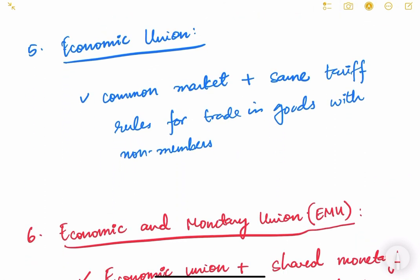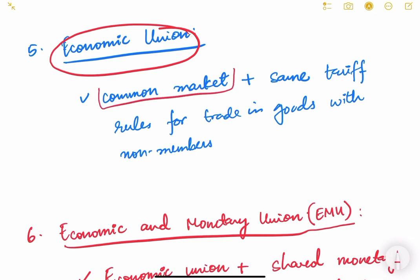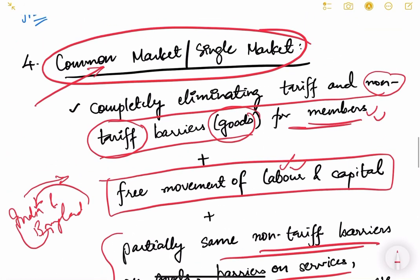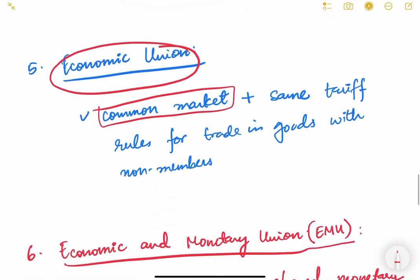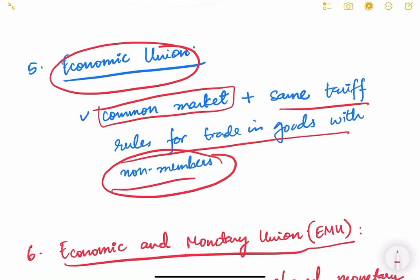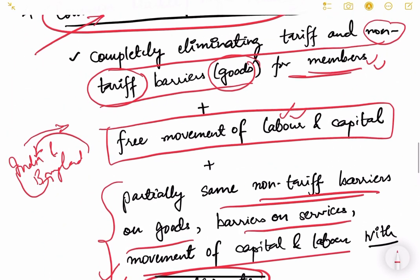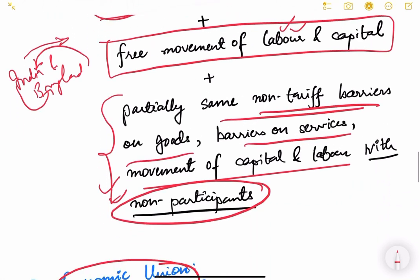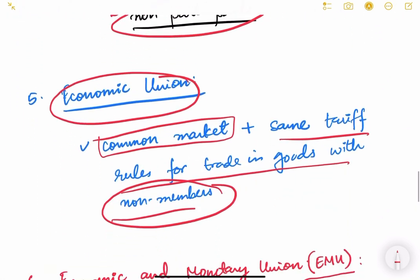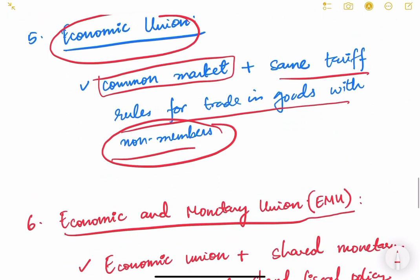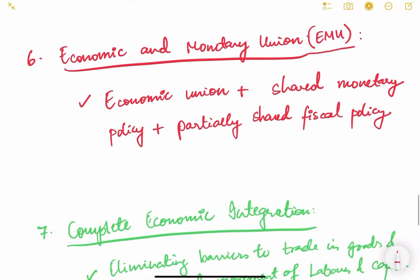An Economic Union includes all the conditions of a Common Market, plus the same tariff rules for trade in goods with non-members as well. This uniform tariff treatment toward non-members represents a further degree of integration beyond the Common Market.